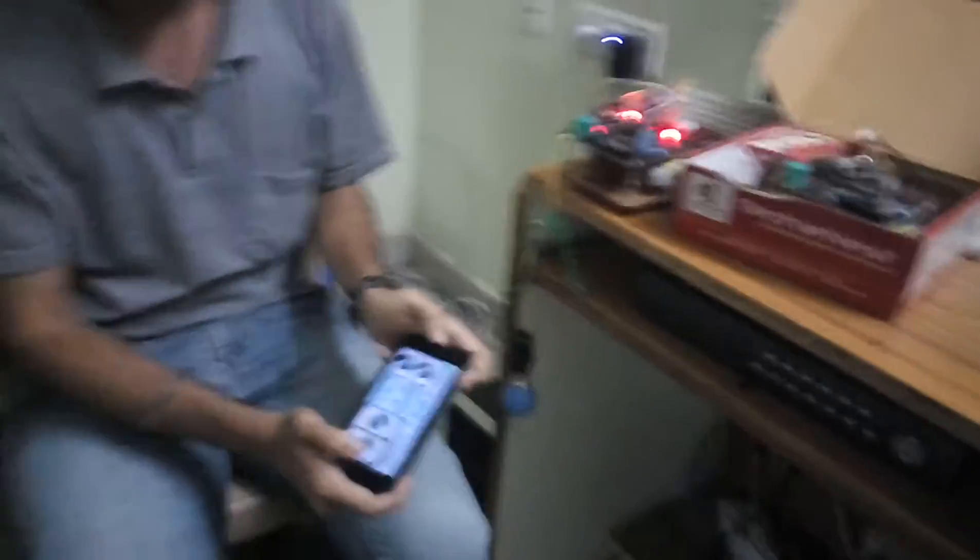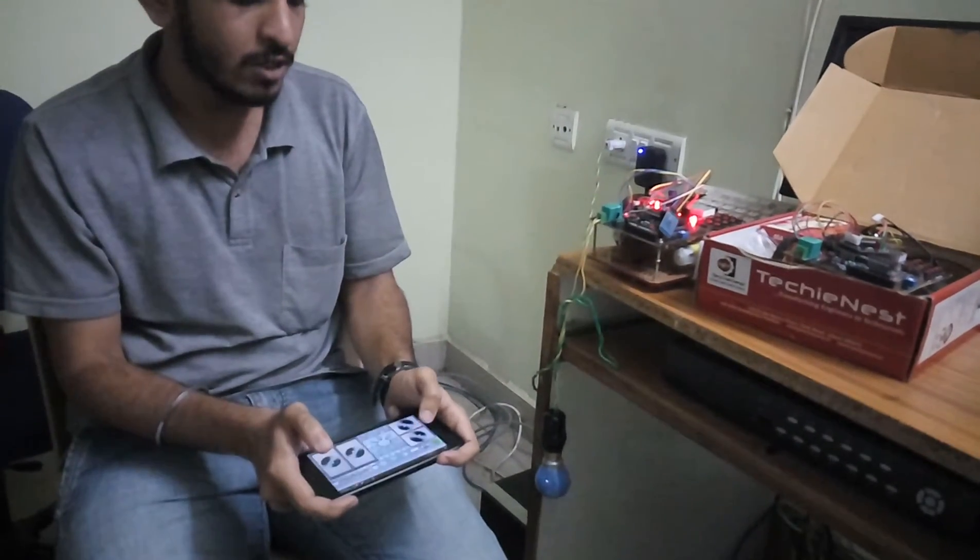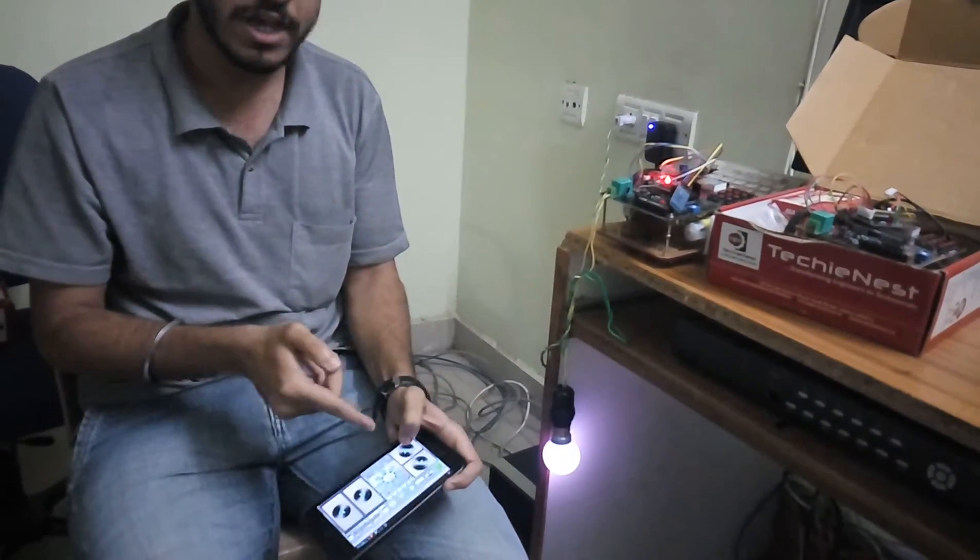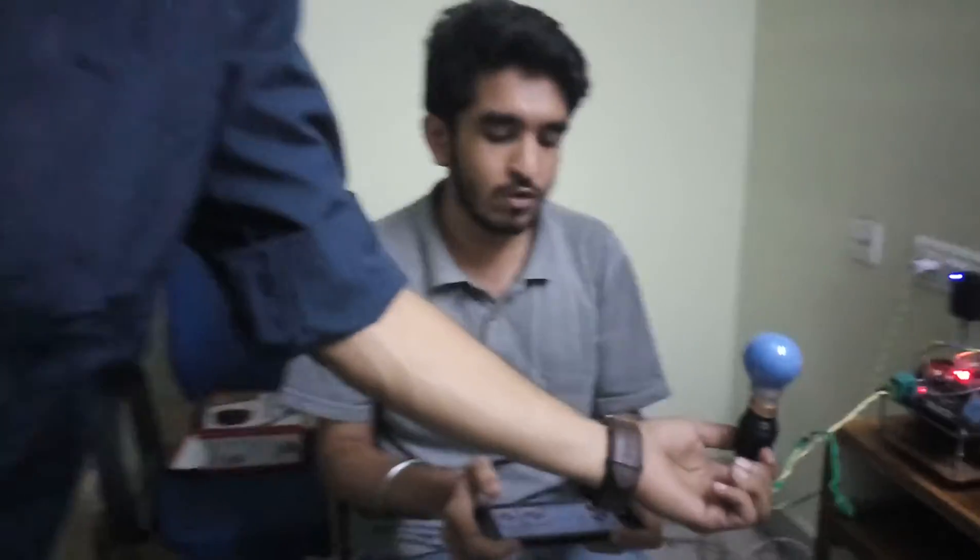Now we can see that there is a green light and the device is connected. Now if you press the first button, the bulb is on and if you press the second button, the bulb is switched off. With the help of this device, you can switch on and switch off any appliance.